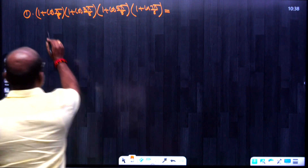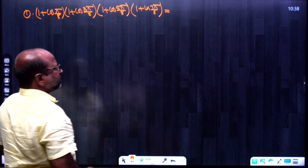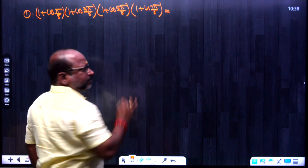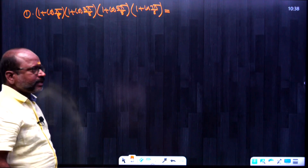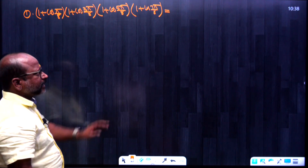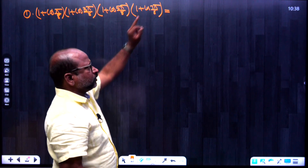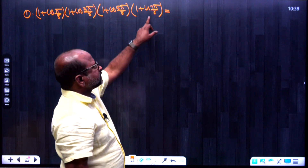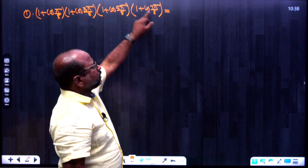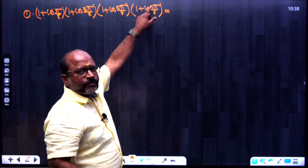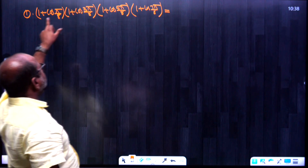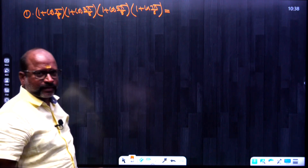So, the first question: (1 + cos π/8)(1 + cos 3π/8)(1 + cos 5π/8)(1 + cos 7π/8). Here, the last angle is cos 7π/8.